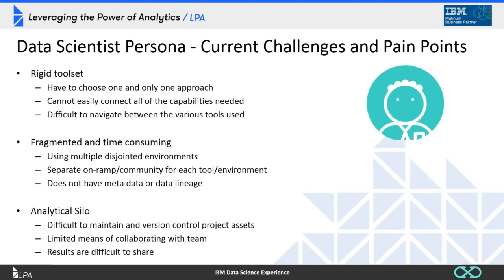The last pain point is the analytic silo concept — maintaining versions can be difficult. If you've got Python here and R there, writing code and putting it in files, you need some mechanism for storing versions and keeping track of versions of data files and code. That can become a headache, and it's difficult to share the data you're working on and collaborate with people — creating the very silos you've been trying to avoid through your analysis.